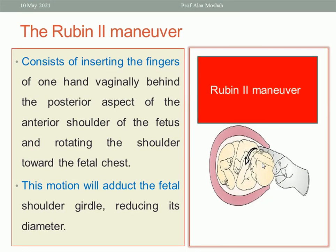If failed, go to the Rubin II maneuver. Please look at this picture. Insert two fingers inside the vagina to the back of the anterior shoulder, and try to push the shoulder in the direction of the fetal chest, as shown by the direction of the arrow. This tries to decrease the biacromial diameter and also change the diameter through which the biacromial diameter enters the pelvis. The Rubin II maneuver, with two fingers on the back of the anterior shoulder pushing toward the baby's chest, will abduct the fetal shoulder girdle, reducing its diameter.